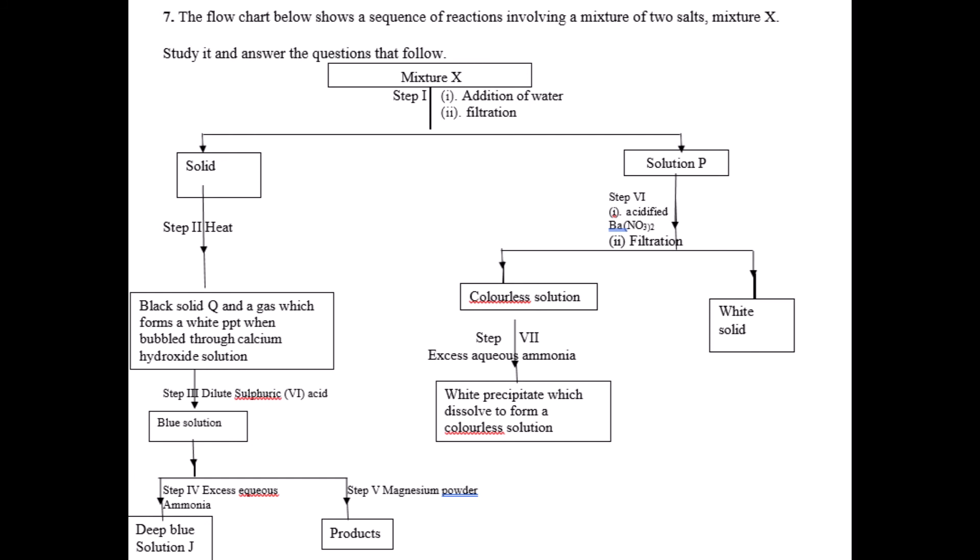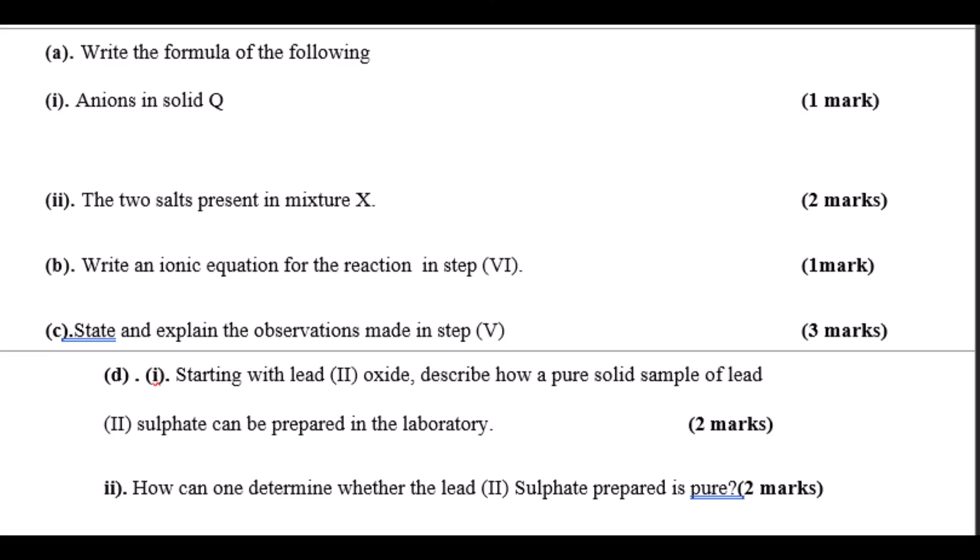On the other side, the filtrate from the beginning: in step 5 and 6, you add acidified barium nitrate then filter. There will be a white precipitate that filters out as a residue, then a colorless solution that when ammonia solution is added until in excess, forms a white precipitate that dissolves in excess ammonia.